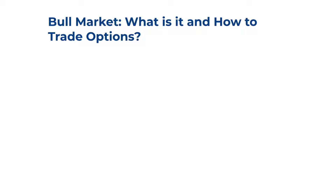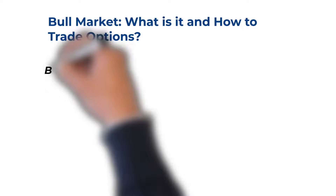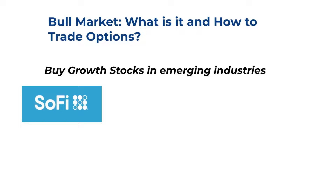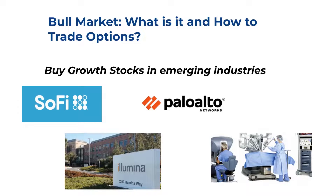Companies such as Apple have already been through bear markets and come out stronger — they have huge amounts of cash on hand. We also want to buy growth stocks in emerging industries such as fintech, cybersecurity, electric vehicles, DNA sequencing, and robotics. Companies like SoFi, Palo Alto Networks, Illumina, and Intuitive Surgical are all companies that should do well once we enter a bull market.